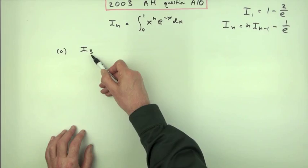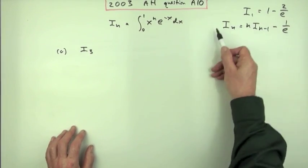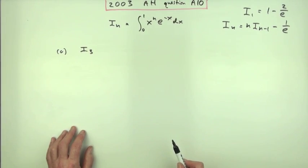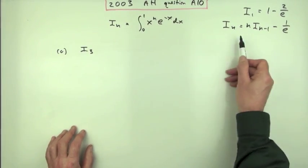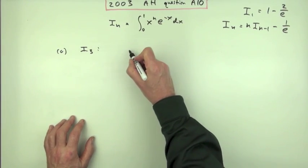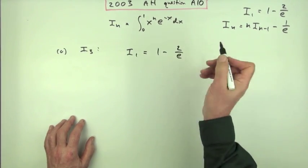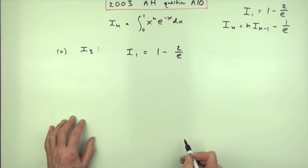So i₃ would be, well, if I know i₁, I can just step through this recurrence relation a couple of times and I'll get there. That's just a case of, well, I start with i₃ and nest it all within each other. Well, I just step my way up. I think I'll just step my way up. So I've got i₁ equals 1 minus 2 over e. And yes, I'm going to stick with over e rather than e to the negative 1.